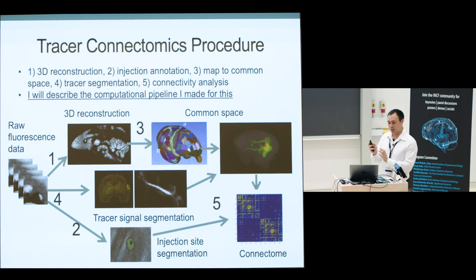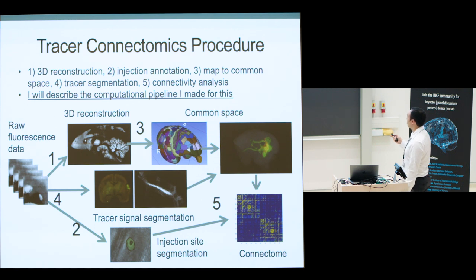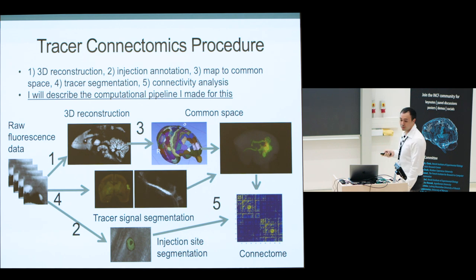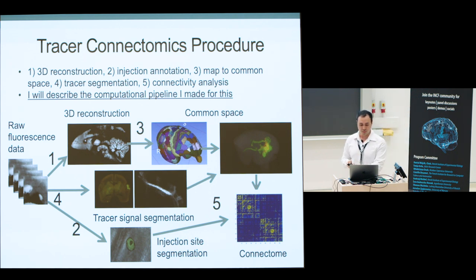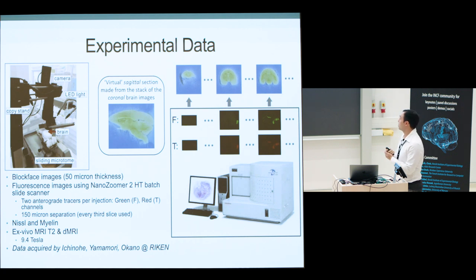What is the actual procedure to go from raw data to a connectivity matrix? You have the raw data, you want to 3D reconstruct it, map it to a common space with an atlas, segment out the tracer signal, and identify the injection site. Using this information you can add one row into your connectivity matrix.